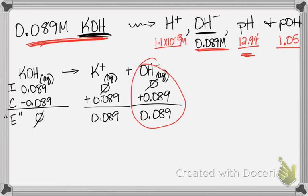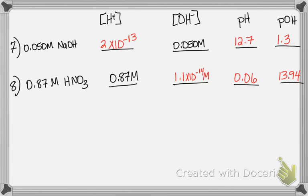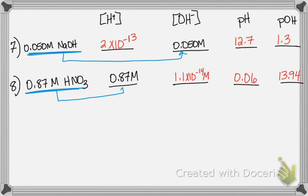Pause the video and work problems 7 and 8. For number 7, 0.05 M NaOH is a strong base, so [OH⁻] = 0.05 M immediately. For number 8, nitric acid is a strong acid, so [H⁺] equals the acid concentration directly — no separate calculation needed. Everything else unfolds from there.